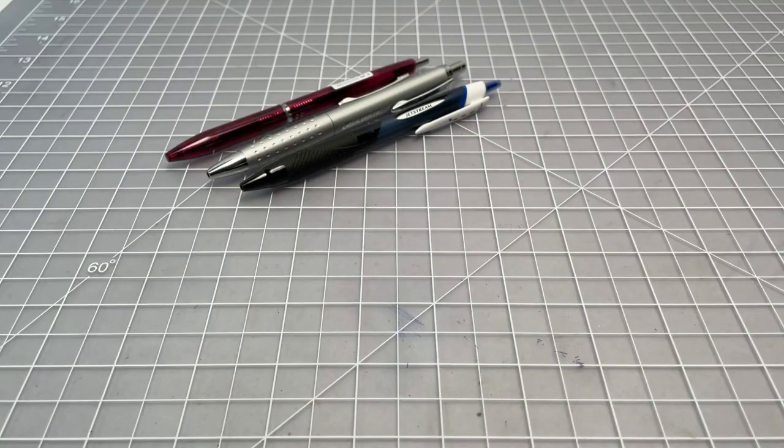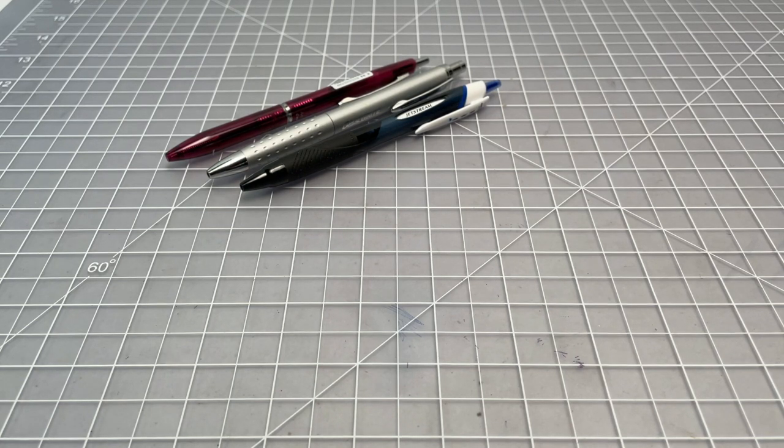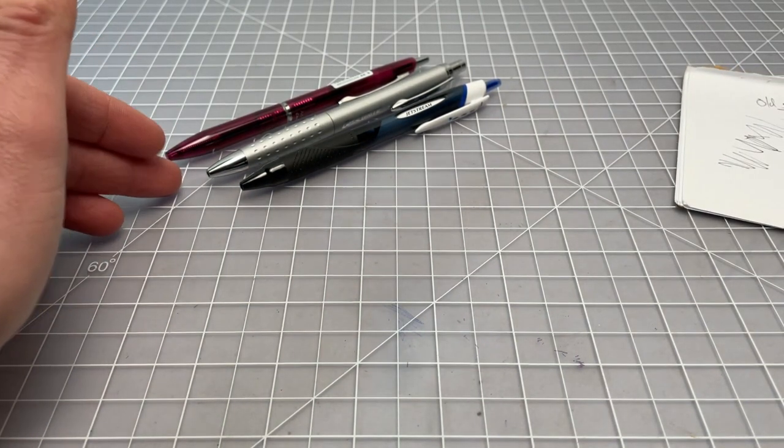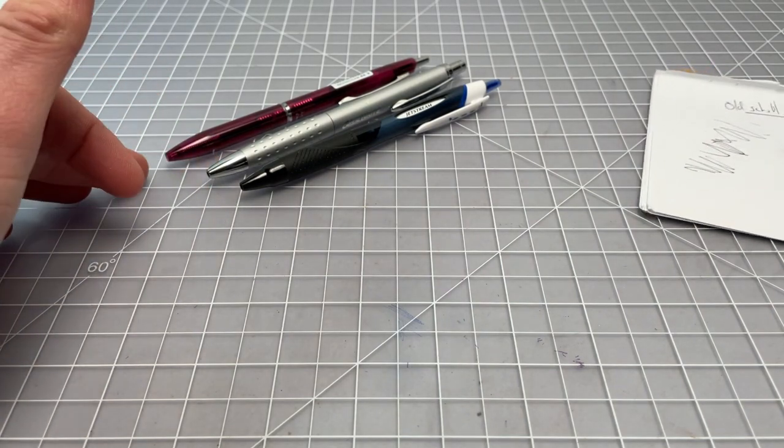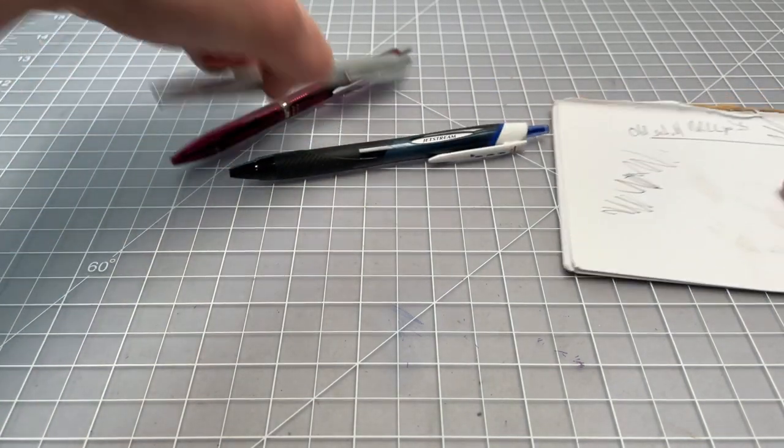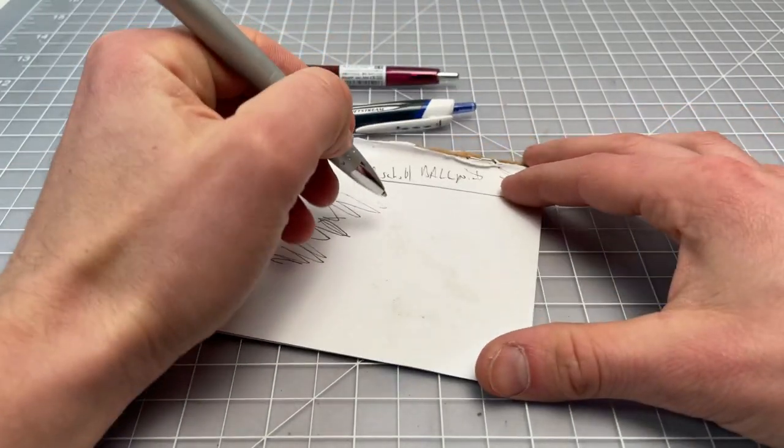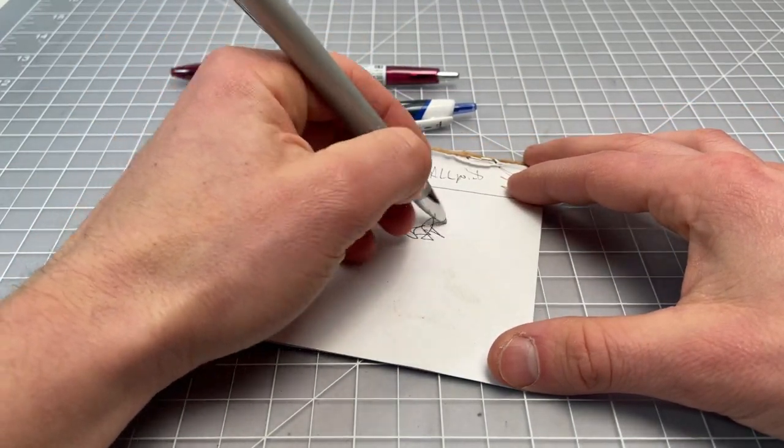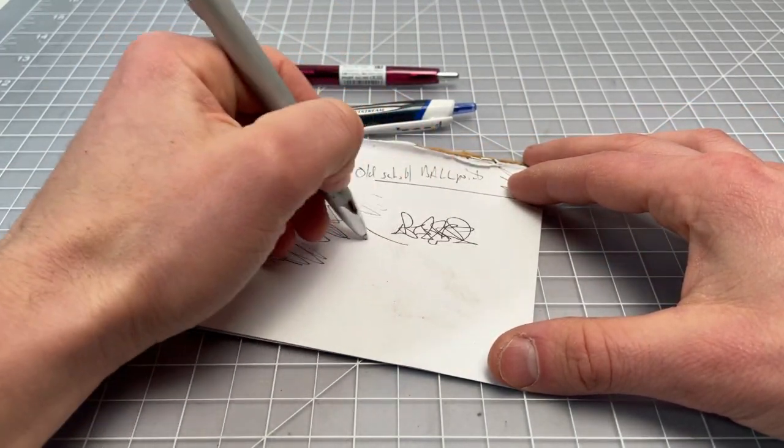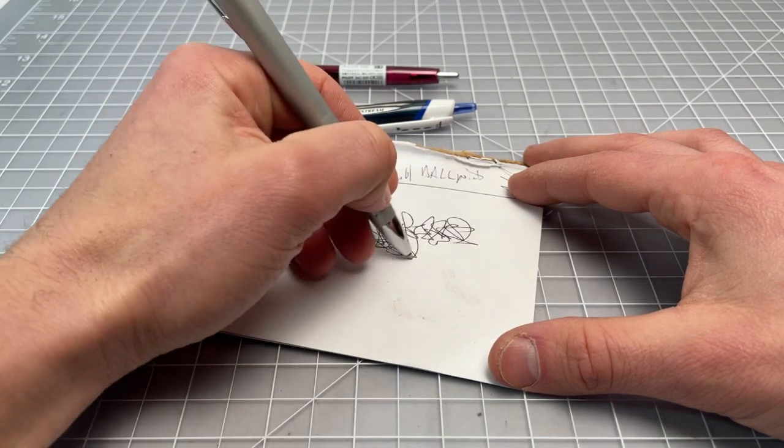I just wanted to do a quick writing sample between the three low viscosity ballpoint pens. We have the Gliderite, the Jetstream, and then the Acro 300. Start off with the Gliderite. Really smooth, really, really smooth, really dark ink. It's really quite nice.